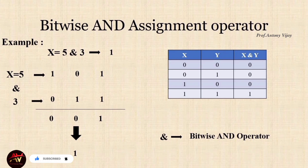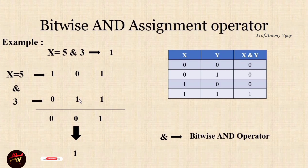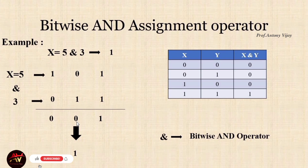For example, X is equal to 5, then we perform bitwise AND operation with 3 — that is 5 ampersand 3. This is a low-level process using binary. X equals 5 has binary value 1, 0, 1. AND with 3, which is binary 0, 1, 1. Performing AND: 1 AND 0 is 0, 0 AND 1 is 0, 1 AND 1 is 1. The result binary is 0, 0, 1 which equals 1. This is the bitwise AND assignment operator.